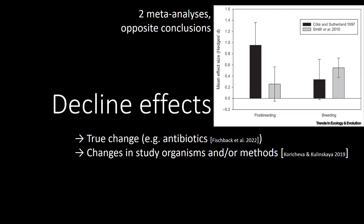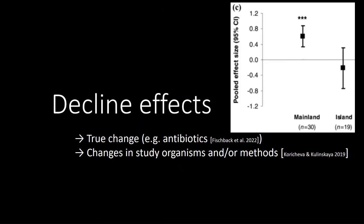Here is an example where two meta-analyses reached opposite conclusions — one published in 1997 and the other in 2010 — on whether removal of predators influences population size of other species. The reason for these opposite conclusions, as detailed by Smith et al., seemed to be that more island studies were conducted over time, and on island populations the effect of removing predators is very close to zero. So just by changing what was being studied, the conclusions were changing.